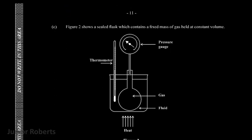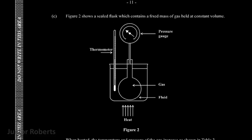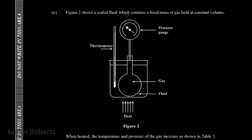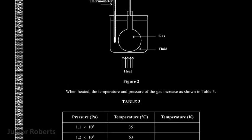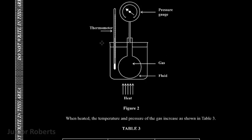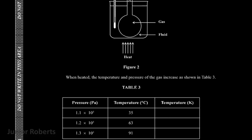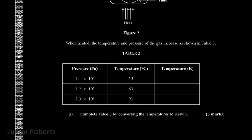Here we have another diagram. This question says Figure 2 shows a sealed flask which contains a fixed mass of gas at a constant volume — those two terms are important. We have a diagram with a thermometer, a pressure gauge, gas, and the flask is submerged in a fluid. Heat is applied to that fluid, which transfers to the gas in the flask. When heated, the temperature and pressure of the gas increase as shown below.